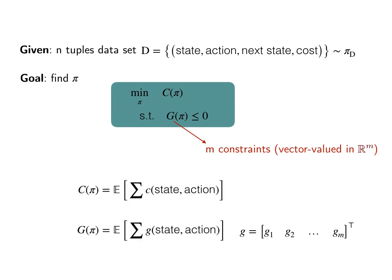C and G are also known in the common reinforcement learning literature as value functions. Specifically, C and G denote the long-term sum of costs, little c and g, except that lowercase g here will be a vector-valued function. So we assume that we have the ability to observe the cost measurements associated with lowercase c and g. And again, this dataset D is generated by some historical data generating policy, π sub D.